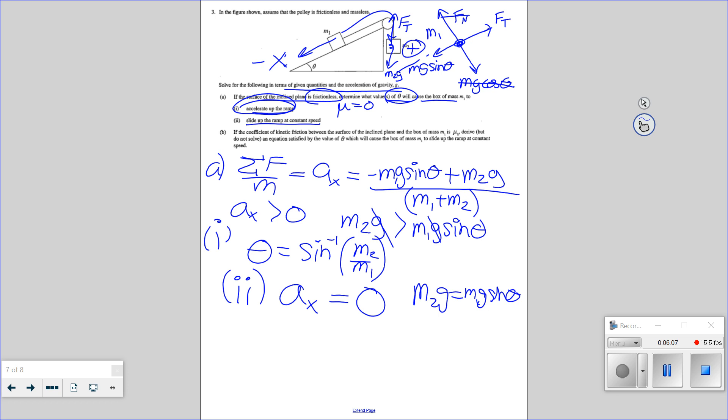oh, careful. I messed up number one. I was overconfident. It needs to be the sine. Let's see if I can do that. Okay. So that means, for number two, that's right. Theta equals inverse sine of M2 over M1.